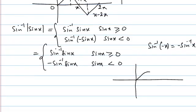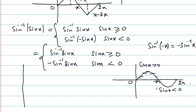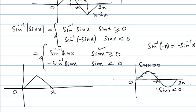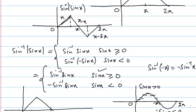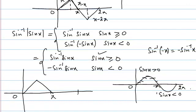sin x is positive between 0 and π — the graph is above the x-axis — and sin x is negative in the interval π to 2π. So in the interval 0 to π, where sin x is positive, we use sin⁻¹(sin x) directly and draw that triangular graph between 0 and π.